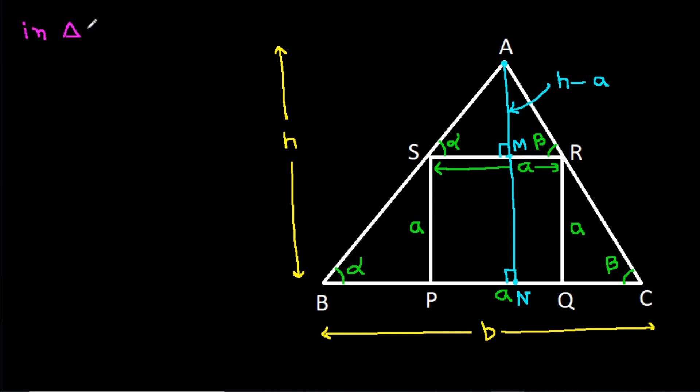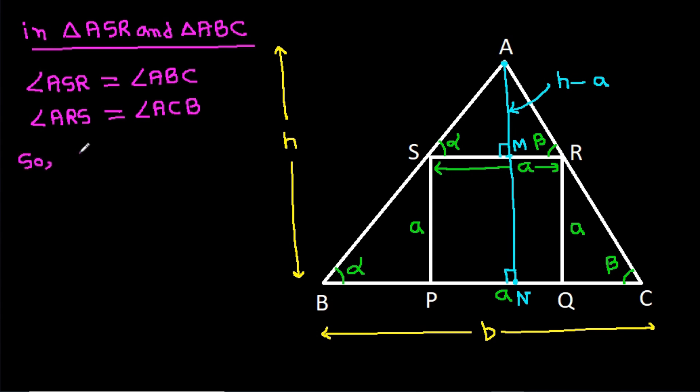In triangle ASR and triangle ABC, we have angle ASR is equal to angle ABC and angle ARS is equal to angle ACB. So, triangle ASR will be similar to triangle ABC.